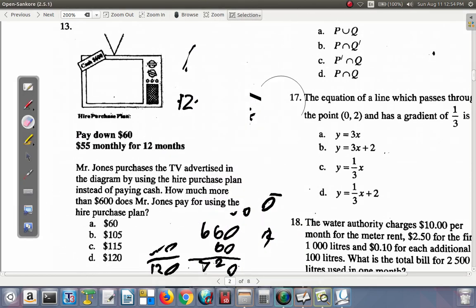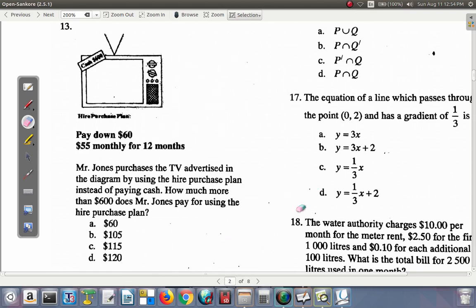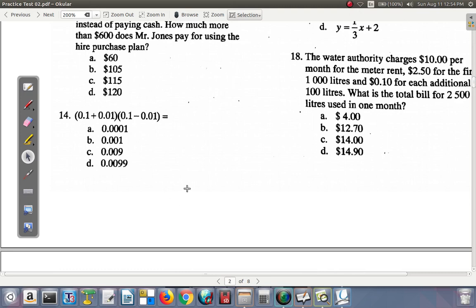Let's erase the rough work and move on. Question 14: 0.1 plus 0.01 in bracket times 0.1 minus 0.01. Let's see what you have. 0.1 plus 0.01, and you're going to find out which one of these it will work out as. Add the 0.1 to 0.01, and what you have is going to be 0.11.